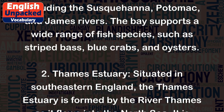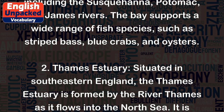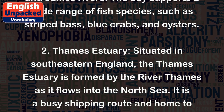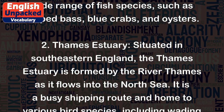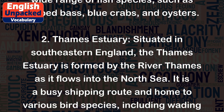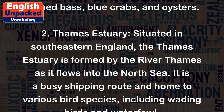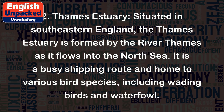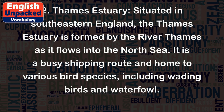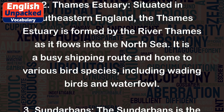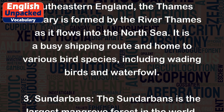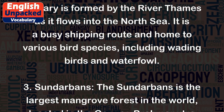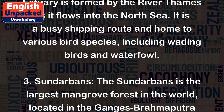2. Thames Estuary — situated in southeastern England, the Thames estuary is formed by the River Thames as it flows into the North Sea. It is a busy shipping route and home to various bird species, including wading birds and waterfowl.